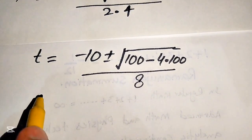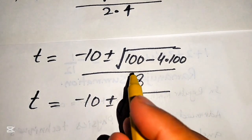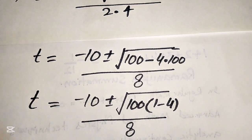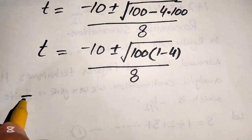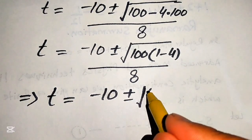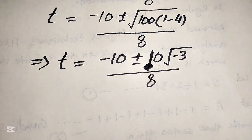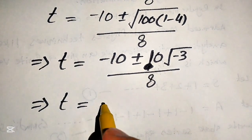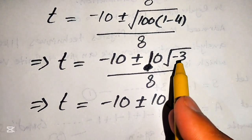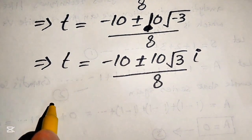Simplifying further, we have t equals (minus 10 plus or minus square root of 100 times (1 minus 4)) divided by 8. Since the square root of 100 is 10 and 1 minus 4 equals minus 3, this becomes t equals (minus 10 plus or minus 10 times the square root of 3 times iota) divided by 8. The negative sign inside the square root introduces the imaginary unit iota.